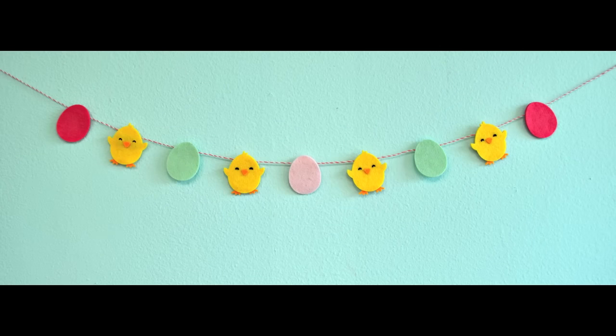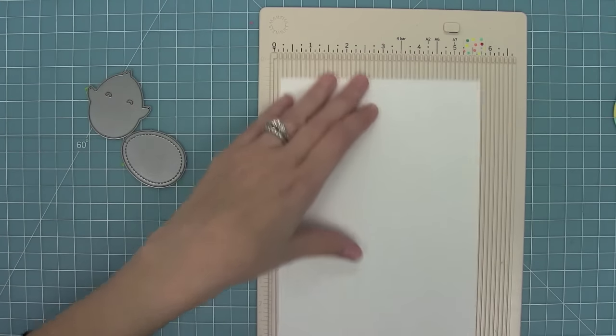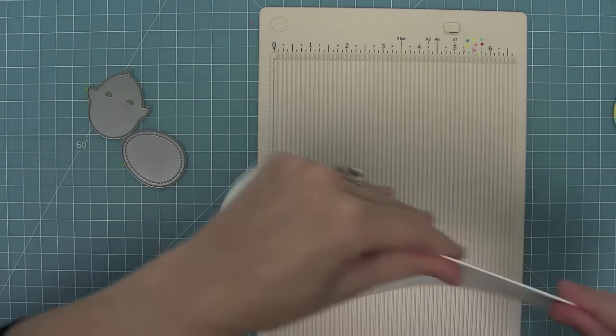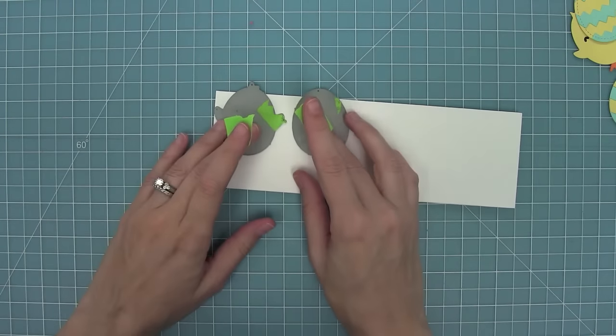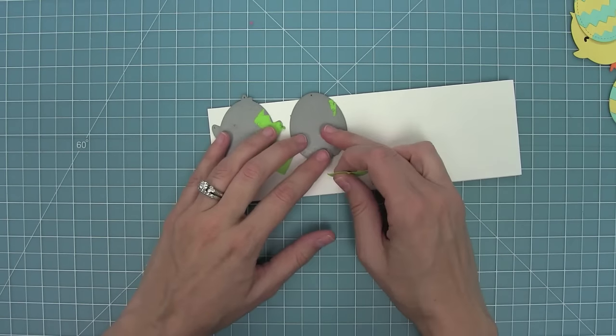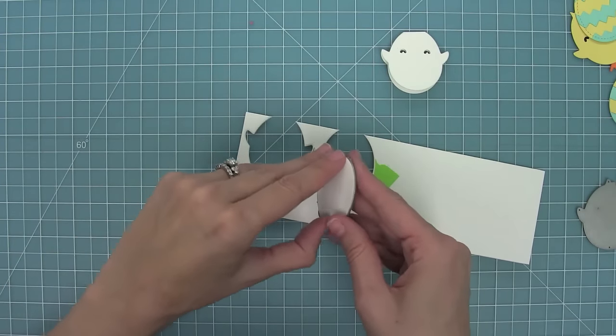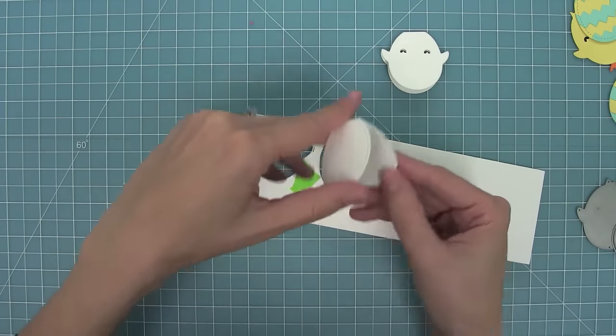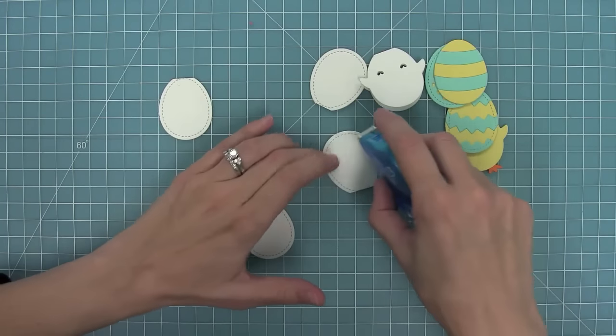Remember those little die cut images we made at the beginning? I thought it would be fun to create some mini cards with them so I'm scoring down a long piece of white cardstock here and I'm going to fold along that line. I'm going to take all of those dies that I used to create those chicks and eggs and I'm going to line them up but with the top part of the die sticking up over the fold. That way when I run it through my die cut machine that top part isn't going to cut and it's going to create a card because the fold is going to be retained.